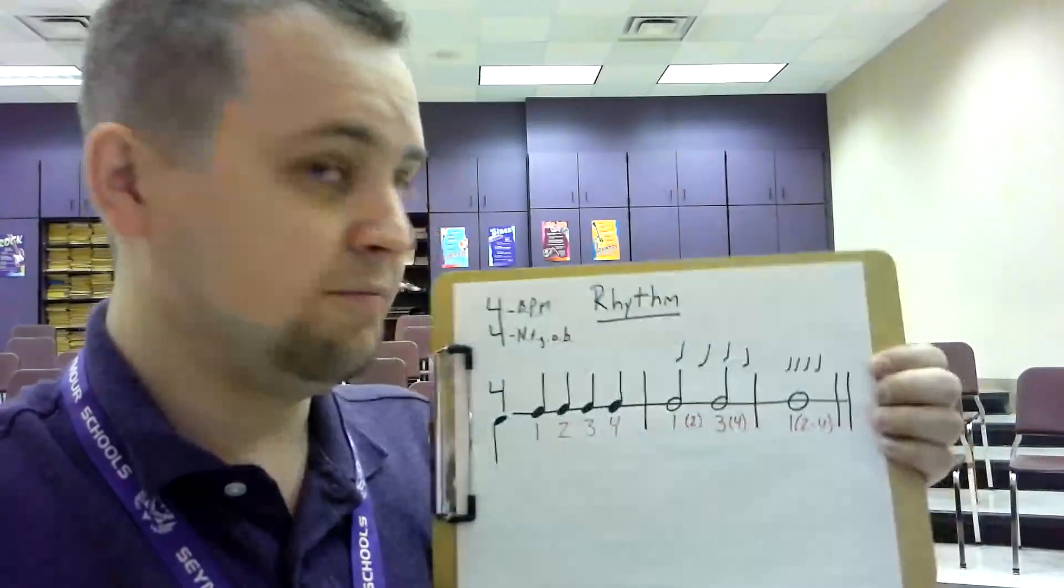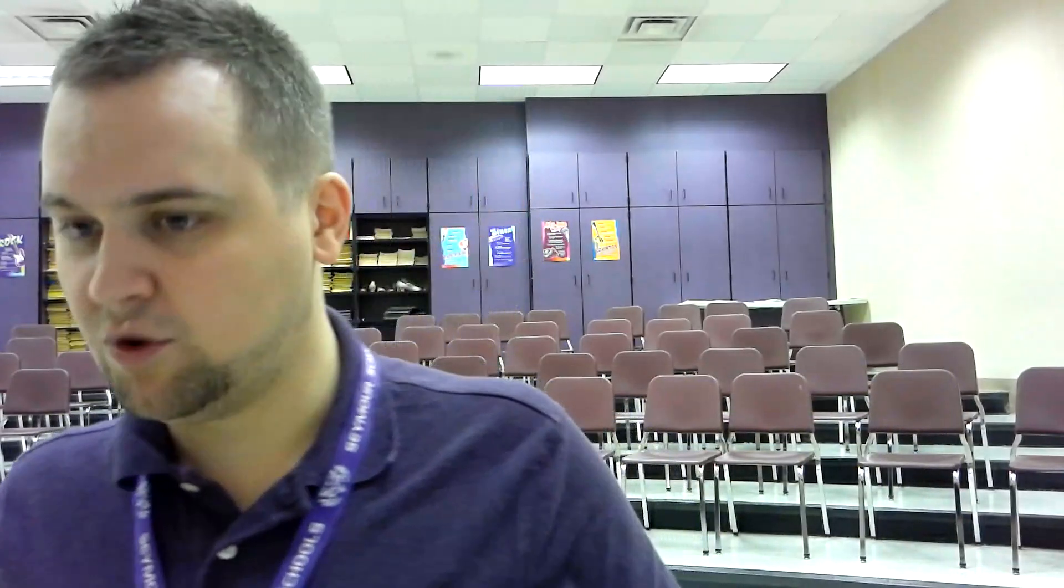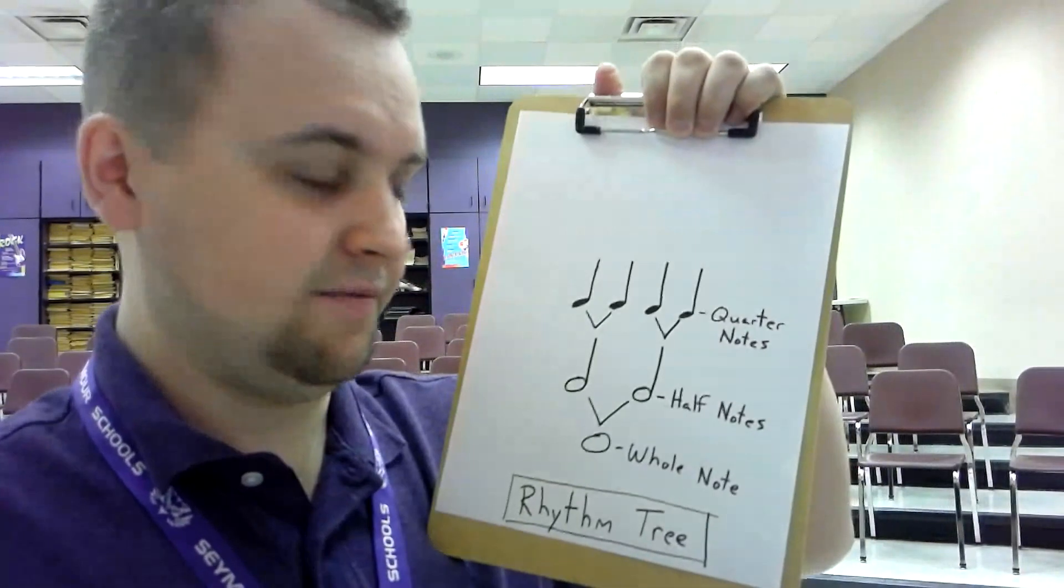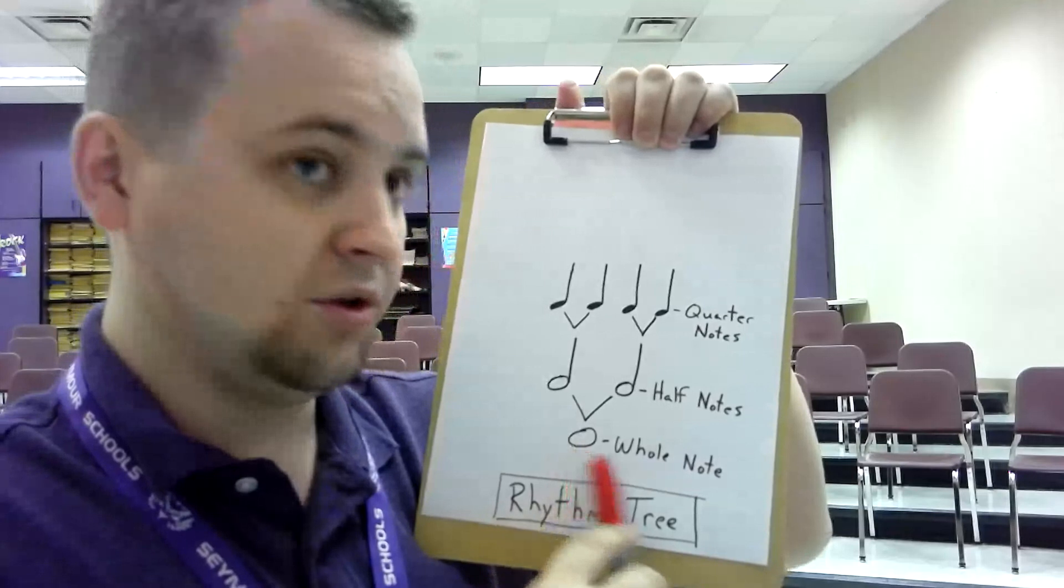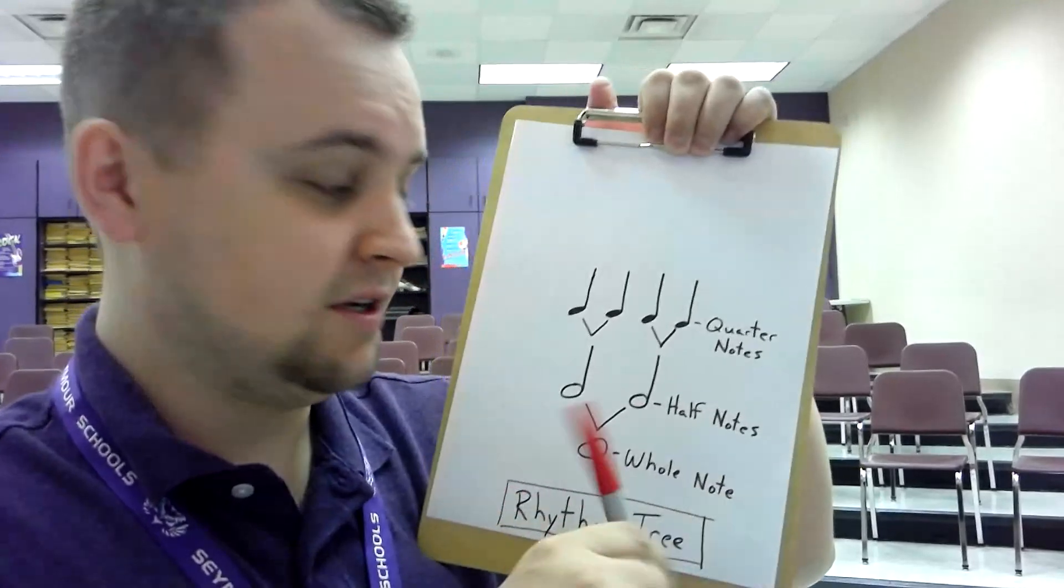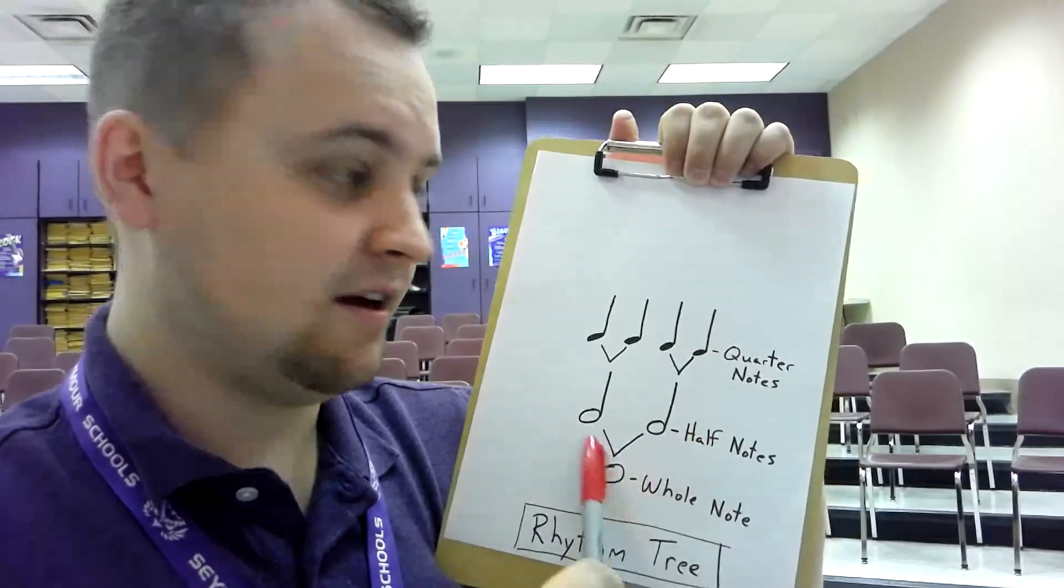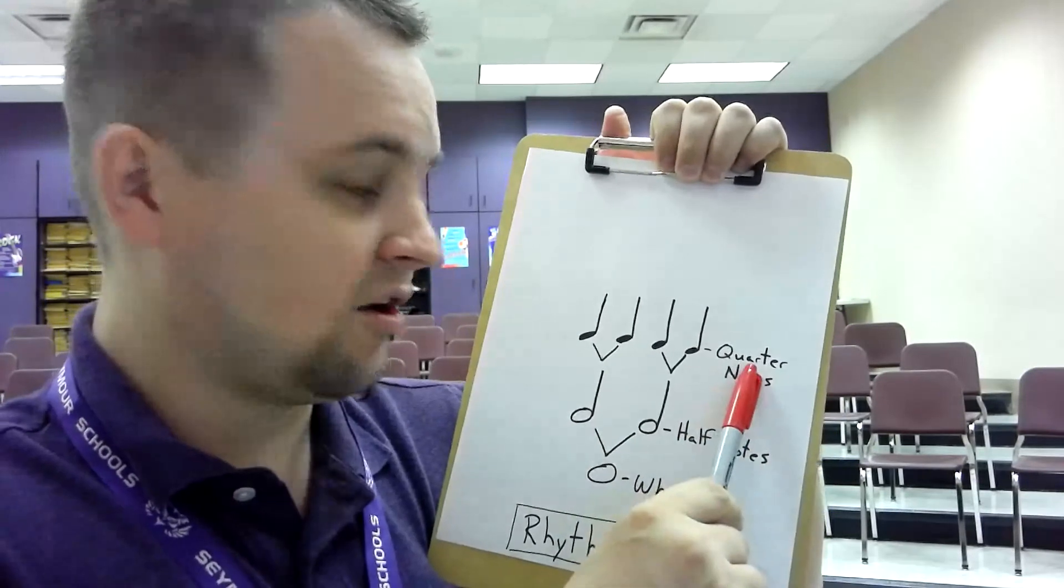Okay, so that is the basic rhythm. Let me show you how the rhythm tree looks to give you a different sense. So in four four time, this is kind of our rhythm tree here. We have the whole note at the bottom, that is the root.